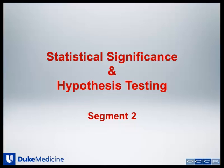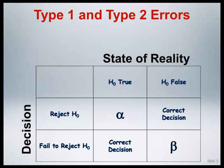Let's continue our discussion of type 1 and type 2 errors. In the table shown here, the columns represent the underlying true state of reality of the null hypothesis — something that in general we never know. Either the null hypothesis is true or the null hypothesis is false. The rows of the table represent the decision made by the researcher to either reject the null hypothesis or fail to reject the null hypothesis. Let's examine what happens with the different possible combinations of decisions and underlying states of reality.